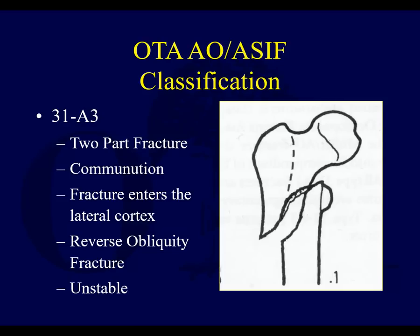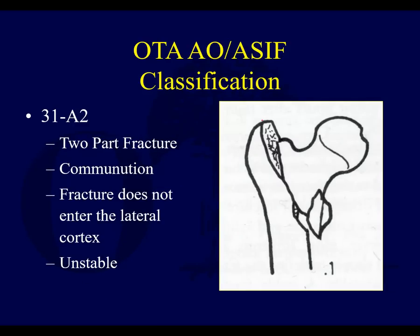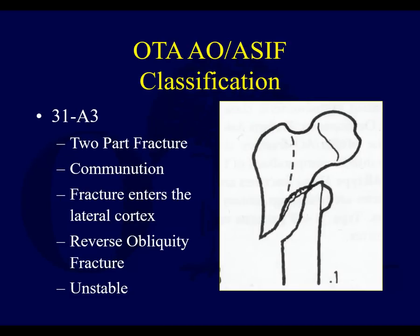Another unstable pattern is the so-called reverse obliquity, or 31A3 fracture in the AO classification. In a standard pattern, the obliquity runs one direction and compressive forces are directed accordingly. With reverse obliquity, the obliquity runs the opposite way — it starts in the intertrochanteric region but almost extends into the subtrochanteric region. Sometimes it's a short oblique. The key point is that you cannot fix these with a compressive force directed superiorly into the femoral head — it simply won't work. These are unstable.